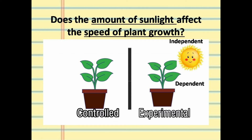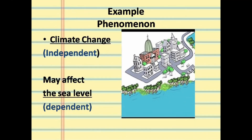After one month, the plant that receives more sunlight in the experimental group — we observe the results. So the independent variable is what causes the effect, and the dependent variable — the plant — is what is affected. Another example involves a phenomenon: climate change is the independent variable. Its effect is sea level — if the ice melts, the sea level rises; if it gets too hot, water may also evaporate.